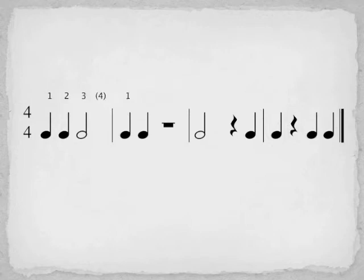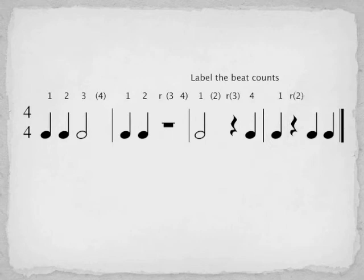For measure two, here is beat one, beat two. This is a half rest, labeled with an R, that holds beat three and four in parenthesis. Can you fill in the rest of the measures? Beat one, hold through beat two, rest on three, speak four. Speak one, rest on two, speak three, four.